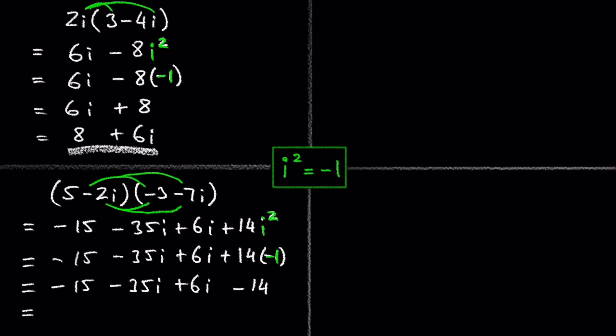The next step is to combine real parts and imaginary parts. So negative 15 minus 14 is negative 29, and negative 35i plus 6i is negative 29i. And we are done with this problem.